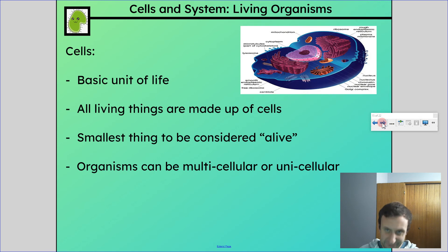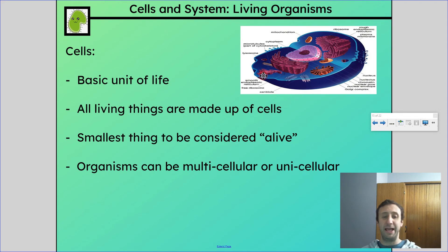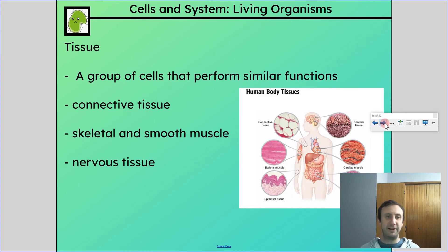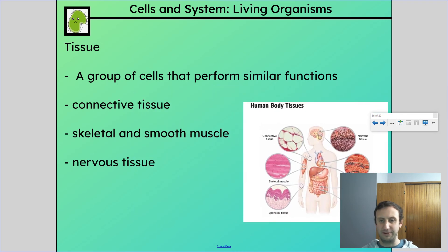Cells will have variations in what they contain and how they look, but they have a lot in common. We're going to learn about organelles — the bits inside a cell that perform specific functions — like the nucleus, mitochondria, Golgi apparatus, smooth endoplasmic reticulum, and more. Organisms can be multicellular or unicellular — one bacteria is a unicellular organism, just one cell. Tissues include connective tissues, skeletal and smooth muscle tissues, nervous tissues, and epithelial tissue in your skin.